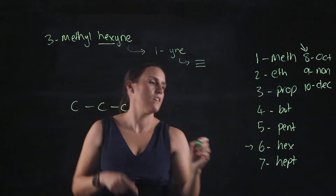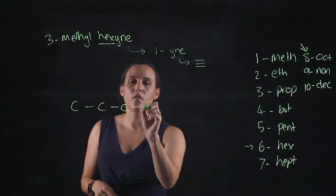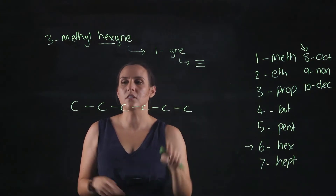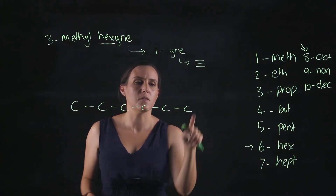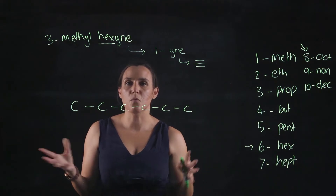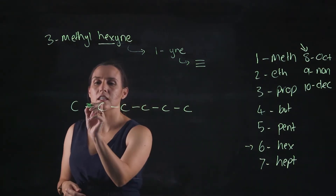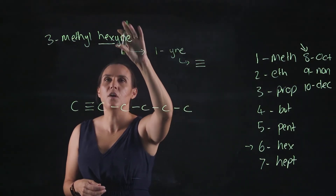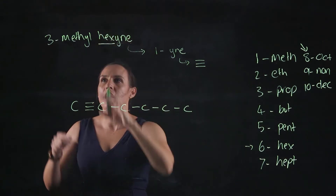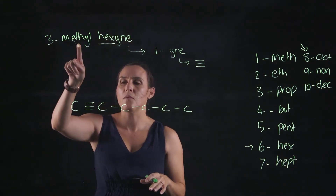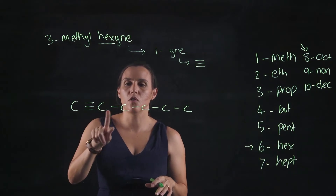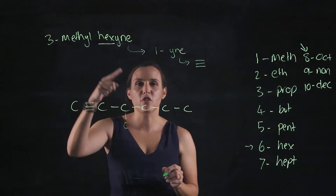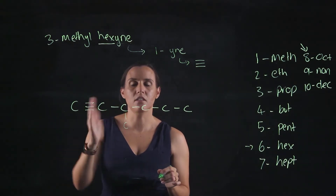Hex is six carbons, so: one, two, three, four, five, six. On the first carbon there's a triple bond — it doesn't matter which end you call carbon one; I'll start from this side. So I've drawn the triple bond and the carbon chain, and on carbon three I've got my methyl. Counting: carbon one, two, three — so on carbon three I draw another carbon, either up or down; I'll draw it down.